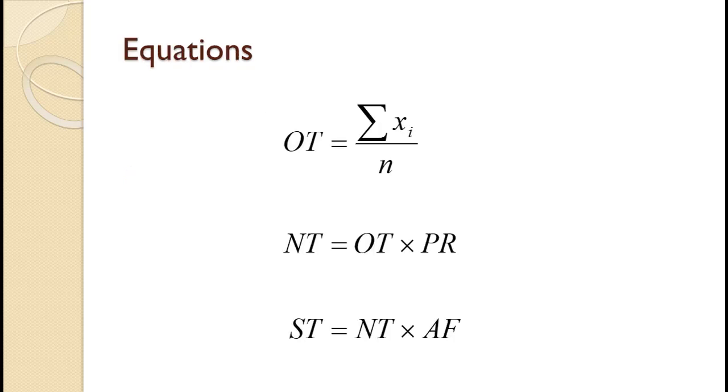The equations are shown on the slide. As stated earlier, the observed time or OT is just the average of the individual observations. That is you add them up and divide by their number.